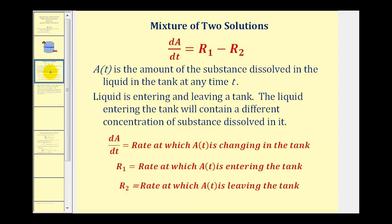So if this is the case, we can say that dA/dt is equal to R₁ minus R₂, where dA/dt is the rate at which A of T is changing in the tank, R₁ is the rate at which A of T is entering the tank, and R₂ is the rate at which A of T is leaving the tank.